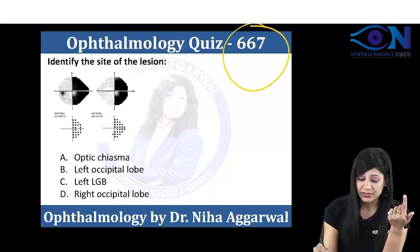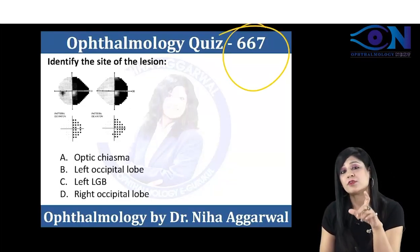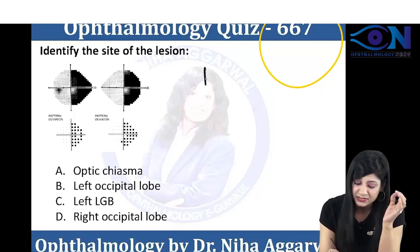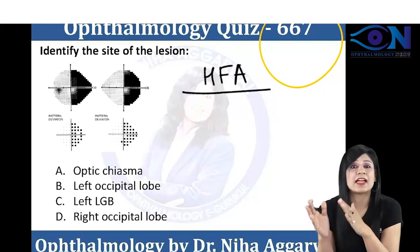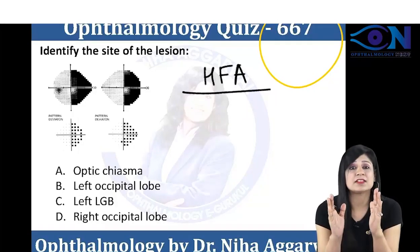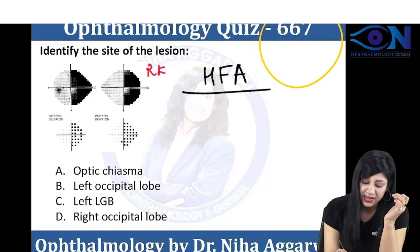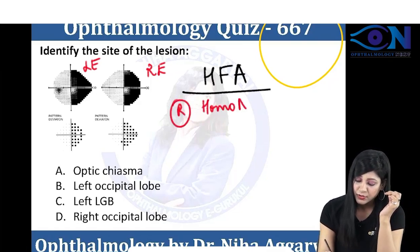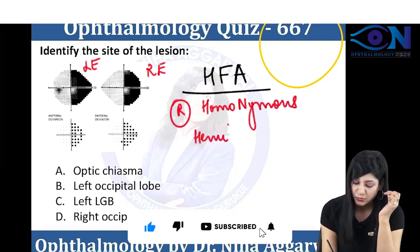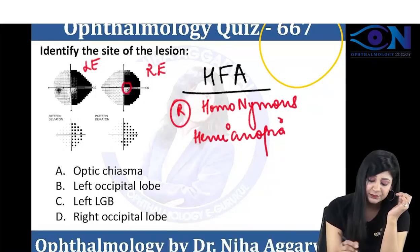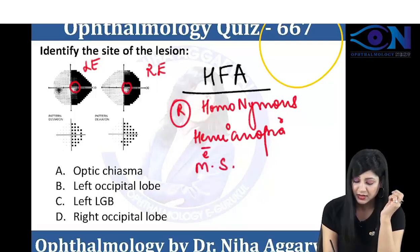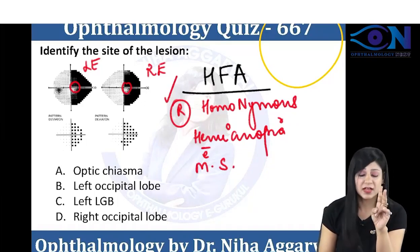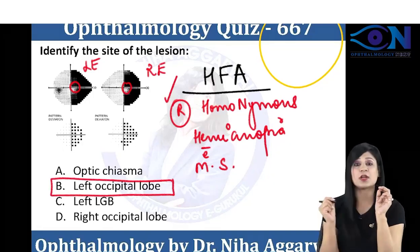This is one of my quiz questions. Here they have not given you the theory; instead they have given you an image. Whenever you read the HFA chart, first of all, think of it as your own visual field. Your right side will be the right eye and your left side will be the left eye. So this is right homonymous hemianopia, and along with this you are having sparing of the central vision — macular sparing. That means it is a lesion of the occipital lobe, and because it is right-sided hemianopia, therefore it will be the left occipital lobe lesion. So the answer is B.